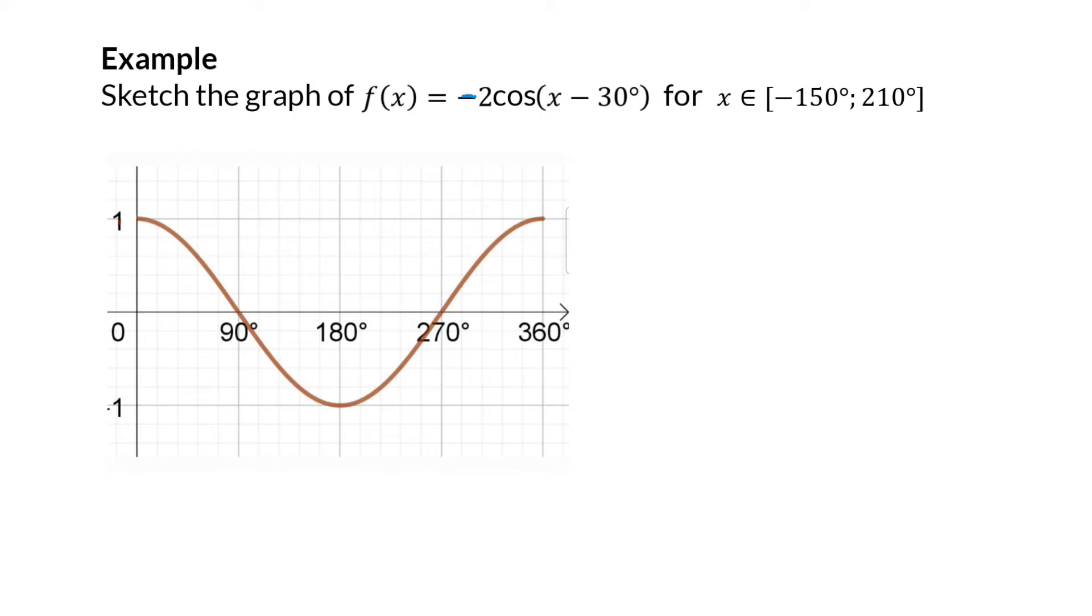Firstly, we know that the minus in front of the equation indicates that it has been reflected around the x-axis and will now look like this. Next, a 2 is multiplied to the front, which means the amplitude changes to 2 and stretches the graph to a maximum of 2 and a minimum of -2.